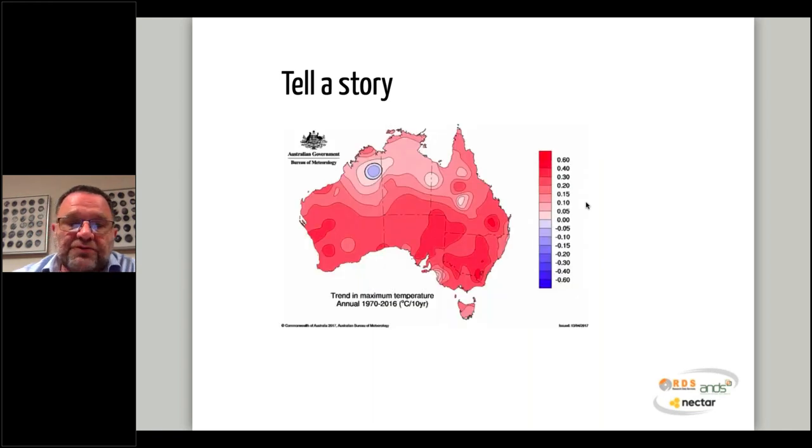He has a simpler graphic, and this one shows the trend in maximum temperatures from 1970 to 2016. Wherever the graph is red, the average maximum temperature has been increasing, and wherever the graph is blue, the maximum temperature has been decreasing over the years. I think this one tells quite an alarming story.